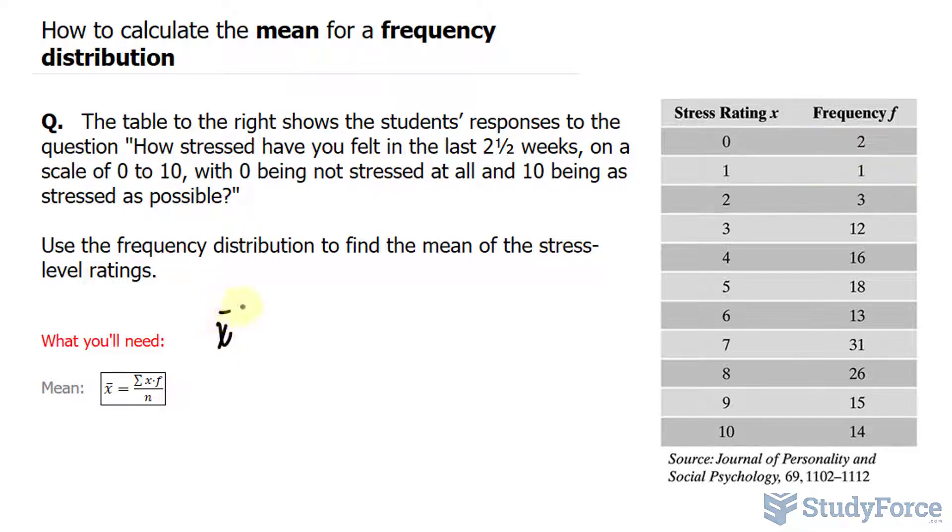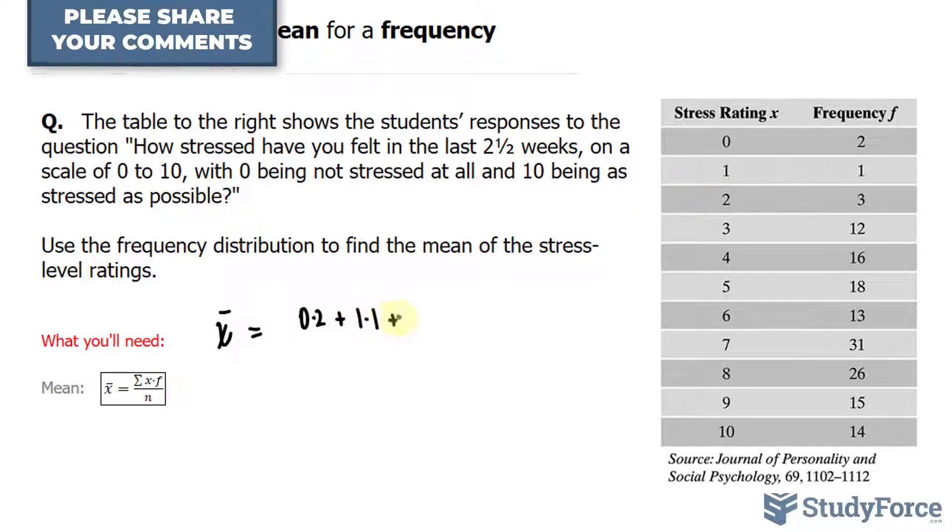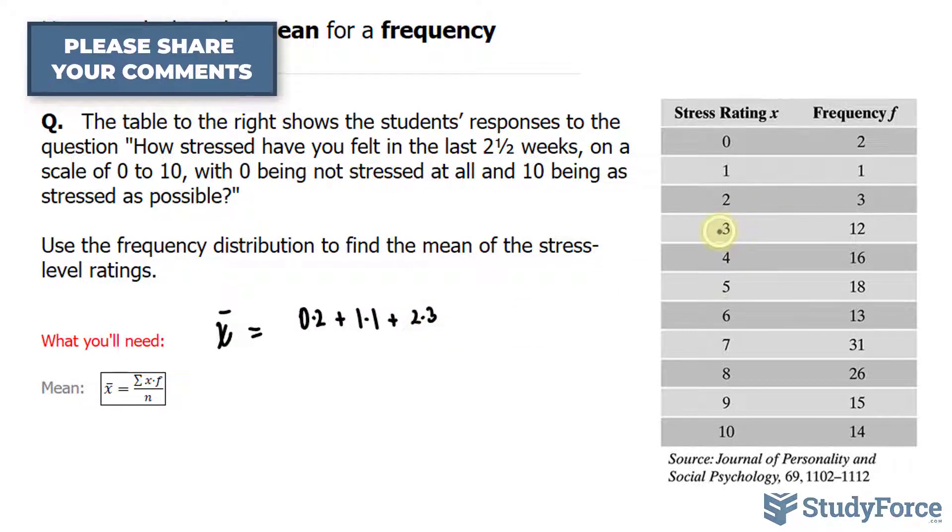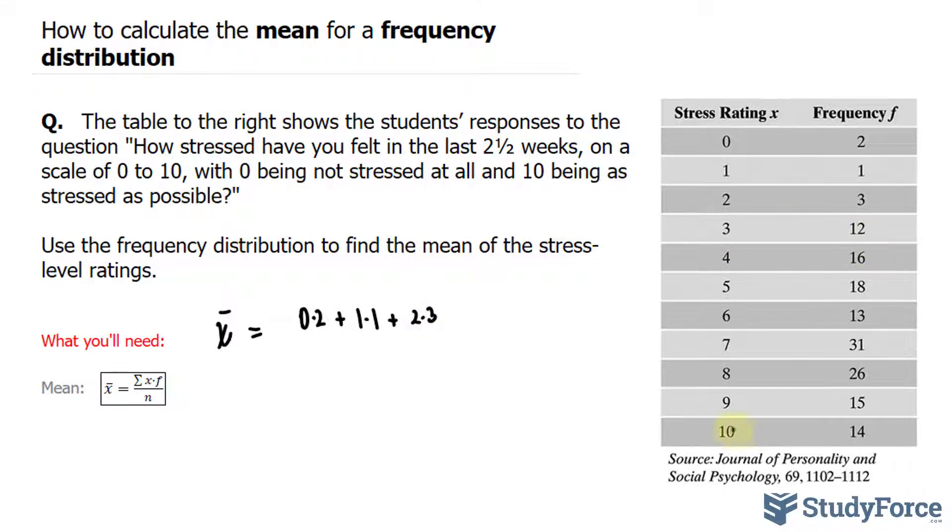The mean, represented as x̄, equals the sum. Let's take the first few rows as an example: 0×2 + 1×1 + 2×3, and you keep doing this. So you would do 3×12, 4×16, all the way to 10×14. If you do that correctly, your expression for the numerator should look like this.